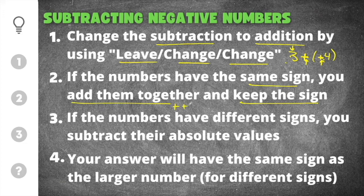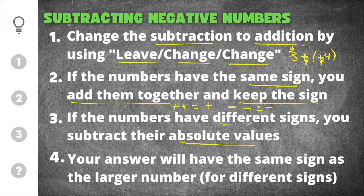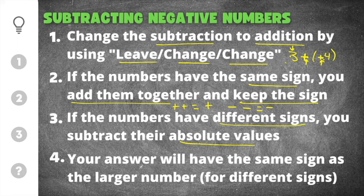After doing leave change change, if the numbers have the same sign you add them together and keep the sign. If you do a positive plus a positive your answer will be positive. If you do a negative plus a negative your answer will be negative. If the numbers have different signs, you subtract their absolute values — absolute value is the distance from zero so it will always be positive — and your answer will have the same sign as the larger number.